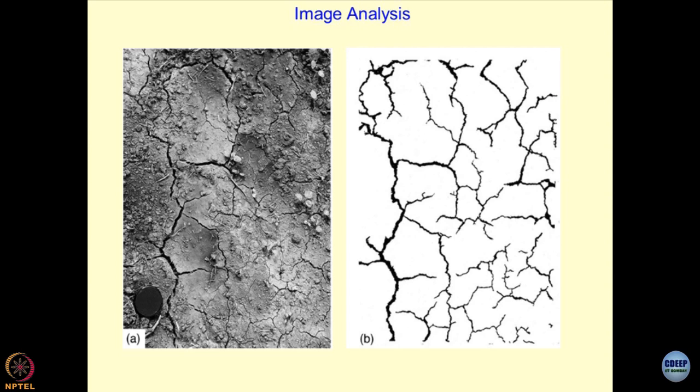So one of the ways to analyze the whole thing is you convert this into a grayscale result. And then by using software, you can find out what are the features of the cracks it develops. I would be more interested in finding out the length, the width, the depth of these cracks, the intersection angle, and the area which is getting included in one of the cracks.